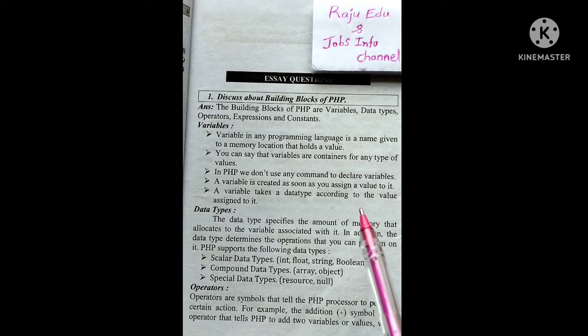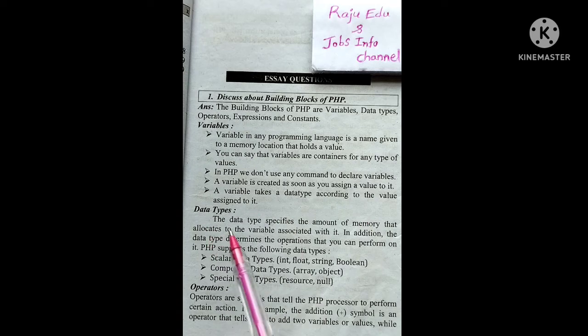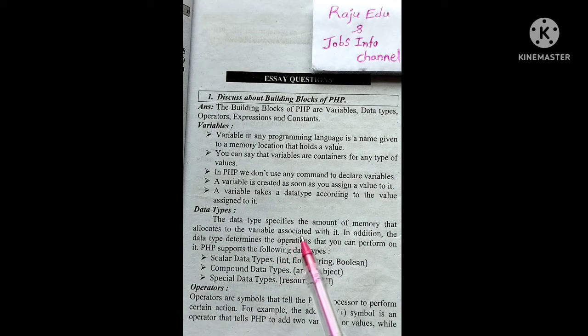Data types determine what kind of data a variable can store. In C language we use int, float, double, and char. In PHP, there are three types of data types.